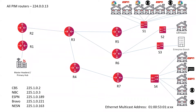Hi, I'm Barbara Fox, and today I thought I'd talk about multicast and PIM Sparse mode. The first thing to talk about is what is multicast. We've got unicast traffic, and that goes from a particular source to a particular destination. We have broadcast traffic, which goes from a particular source to every destination on the network. And then we have multicast traffic, which goes from a particular source to a set of destinations on the network.